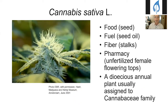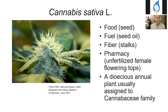We're discussing Cannabis sativa, which means cultivated cannabis — probably the most useful single plant on earth. Food is available from its seed, fuel from the seed oil, fiber that makes very good clothing from the stalks, and of greatest interest today, pharmacy, mainly from the unfertilized female flowering tops. This plant is an annual with different sexes — it's what's called dioecious — and it's in the cannabaceae family along with hops.